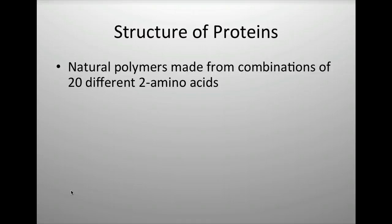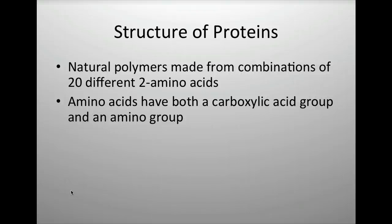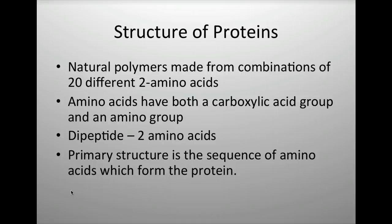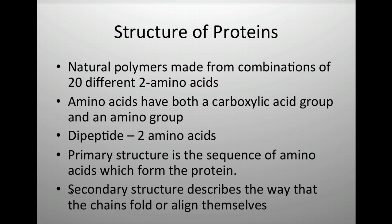Moving on to proteins — proteins are polymers made from combinations of 20 different amino acids. When we talk about an amide — a C=O connected to an NH or NHR group — that is an example of a peptide bond. An amino acid has a carboxylic acid group on one side and an amino group on the other. A dipeptide is formed from two amino acids, a tripeptide from three, and so on. The primary structure of a protein is the sequence of amino acids, often written with three-letter codes like 'ala' for alanine.